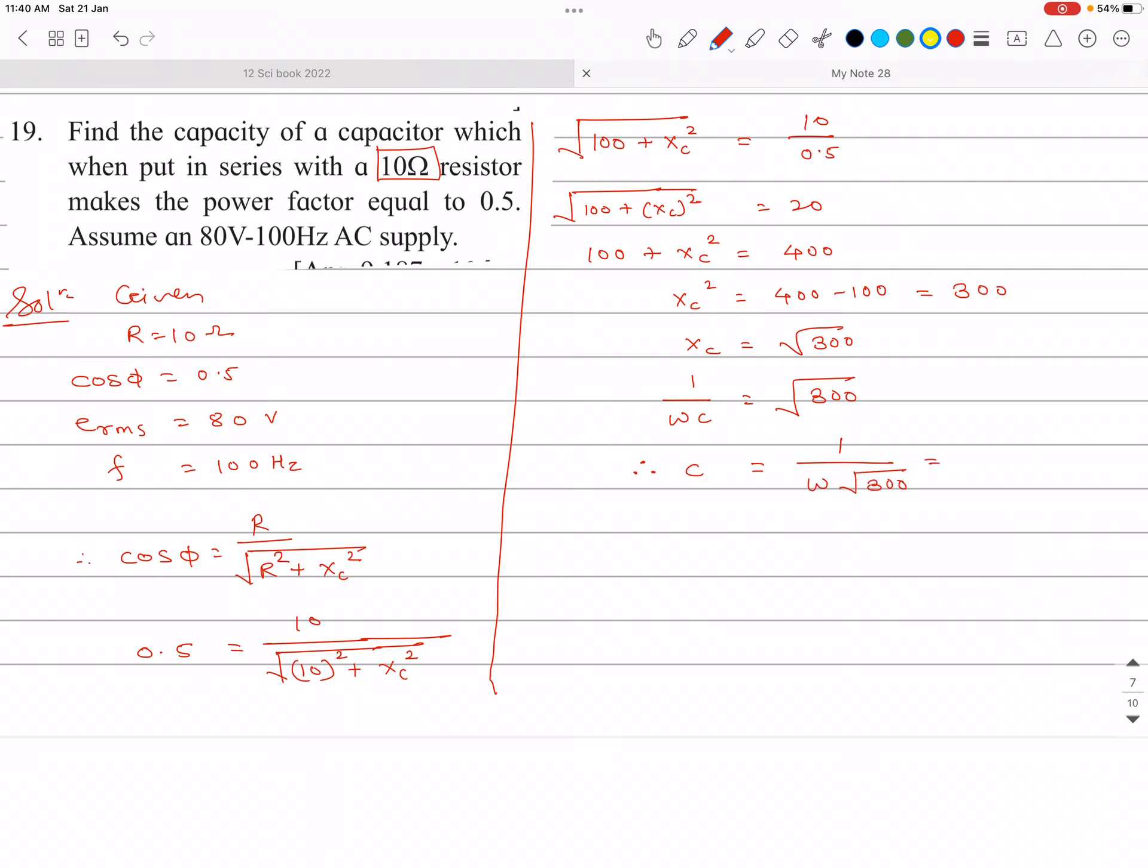So this omega we can write as 2 pi f. So 2 pi f root 300. Now let me substitute the values.